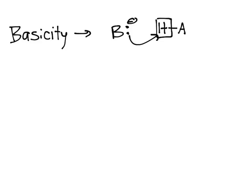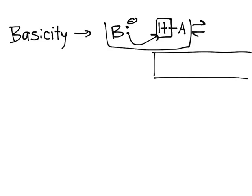and then that's in equilibrium with the whole thing down here. I'm going to draw it down here. So I'll separate those two. And so that's in equilibrium with B-H and A minus. So that represents basicity.